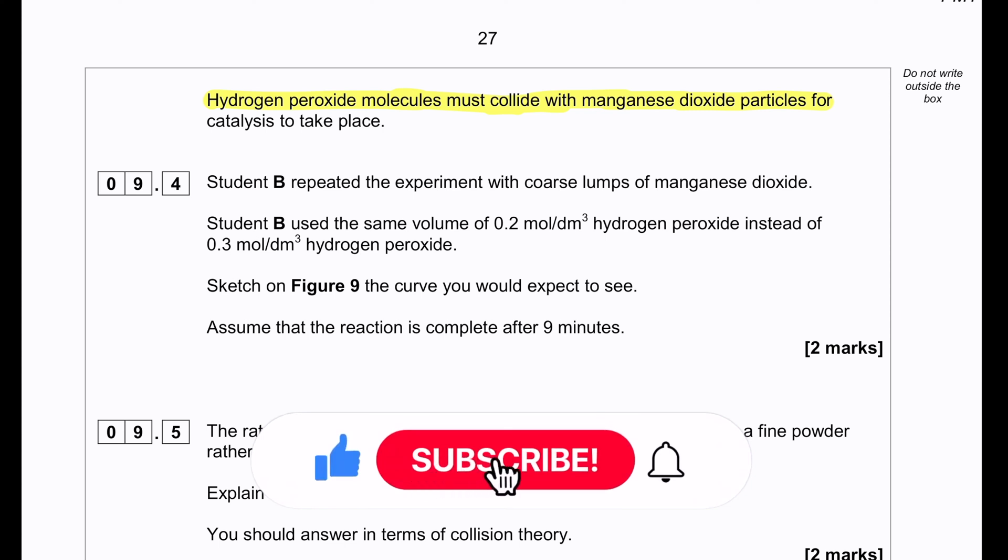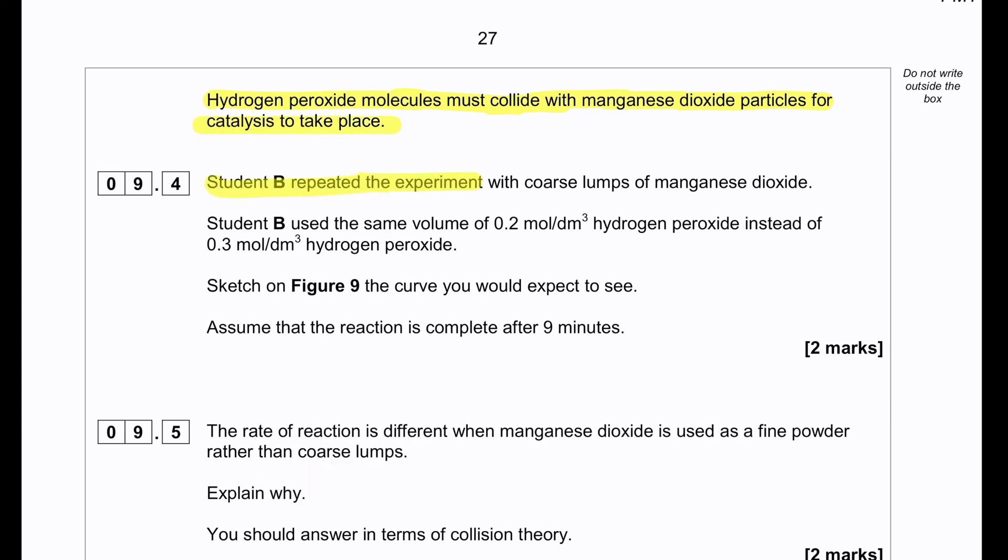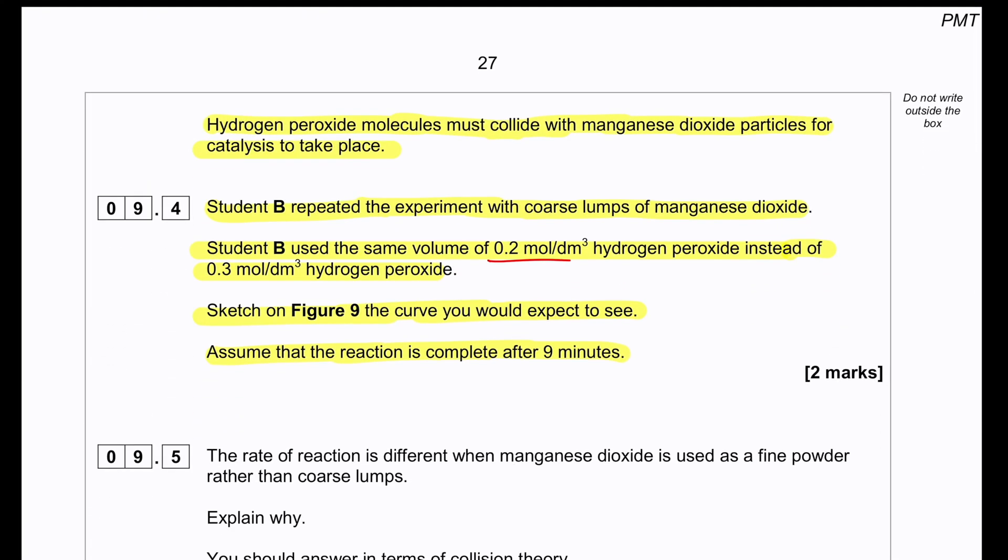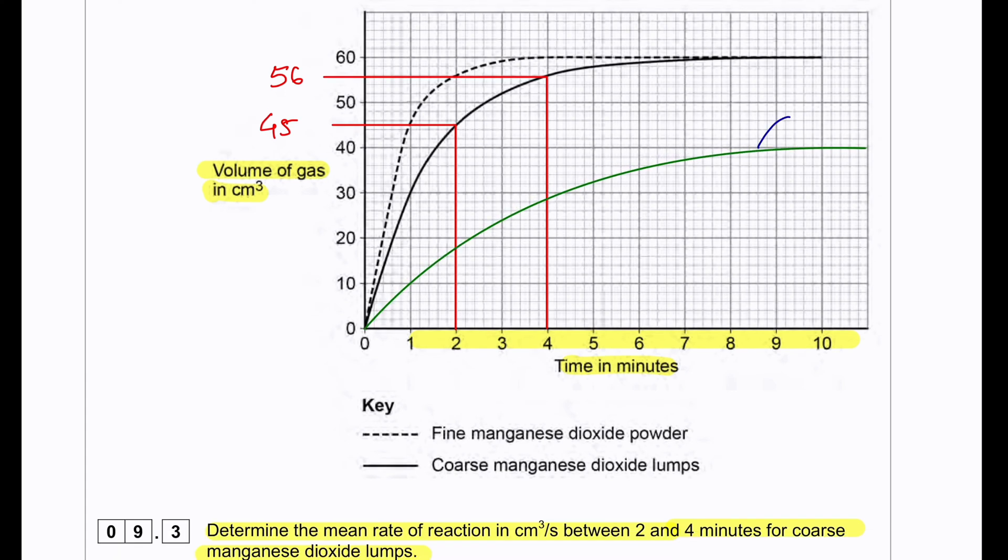Hydrogen peroxide molecules must collide with manganese dioxide particles for catalysis to take place. Student B repeated the experiment with coarse lumps of manganese dioxide. Student B used the same volume of 0.2 mol per dm³ hydrogen peroxide instead of 0.3 mol per dm³ hydrogen peroxide. Sketch on Figure 9 the curve you would expect to see. Assume the reaction is complete after 9 minutes. Because we are using less concentration of hydrogen peroxide, the line will start at the origin and produce a less steep line than the solid line. However, it will level up at 40 cm³ because we are using two-thirds of the original concentration, so if we multiply that with the volume 60, we get 40 cm³ as our final amount of product.